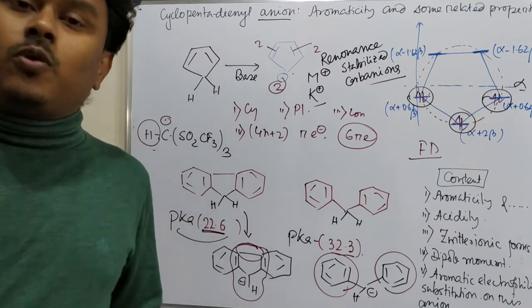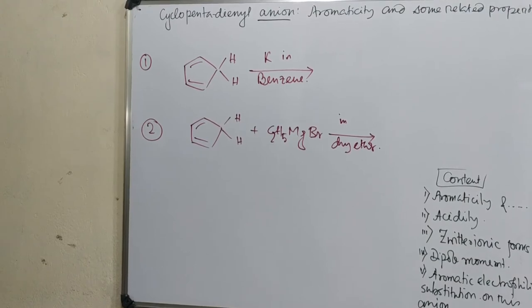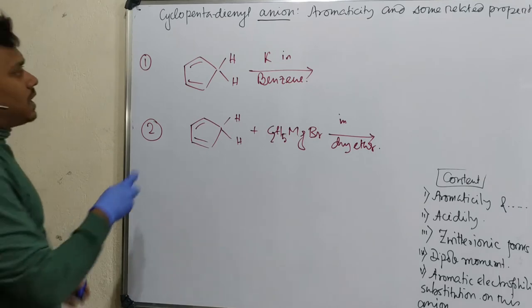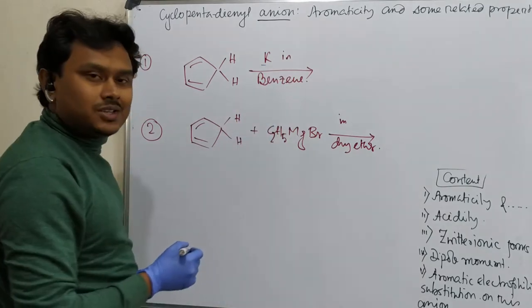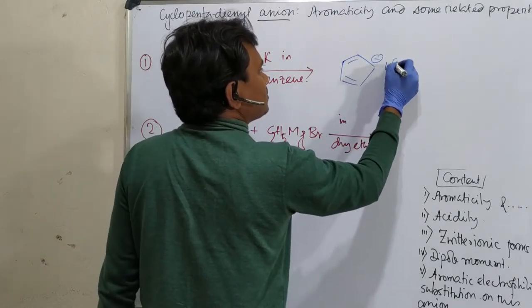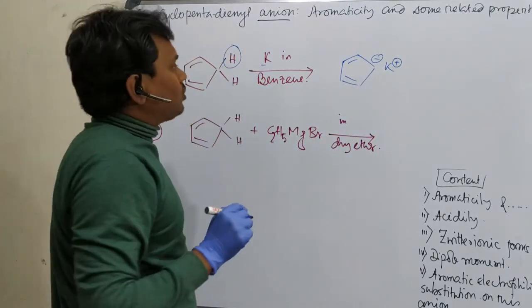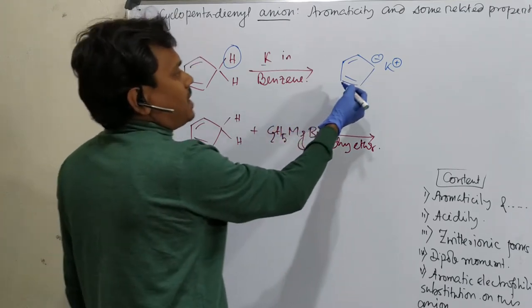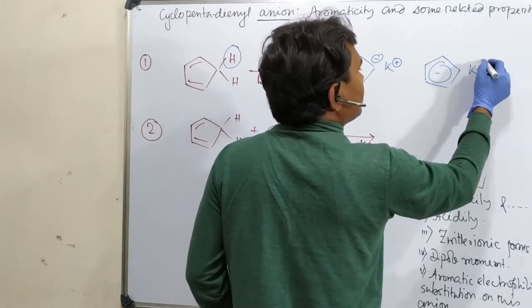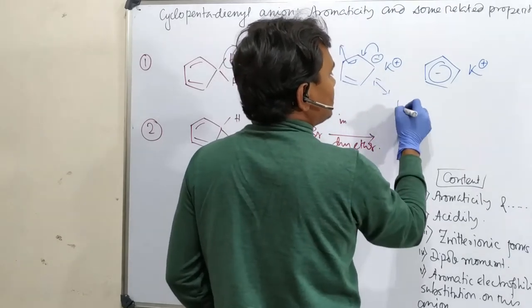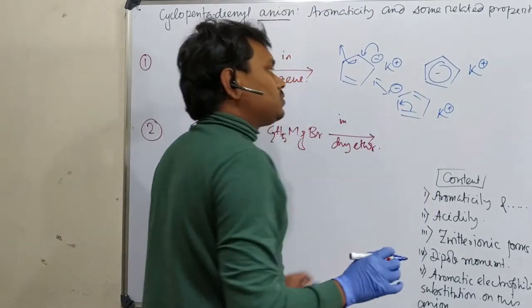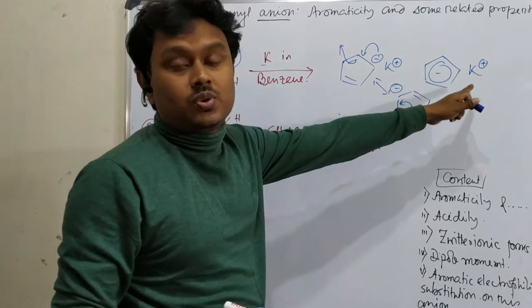Let's discuss some other examples related to the acidity of cyclopentadiene. If you take cyclopentadiene and react it with potassium metal in benzene, the result is the potassium salt of cyclopentadienide — minus K plus. This proton is sufficiently acidic because its corresponding conjugate base, the potassium salt of cyclopentadienide, is resonance-stabilized. It is better to represent this molecule as the delocalized anion, since the charge is delocalized around the ring.